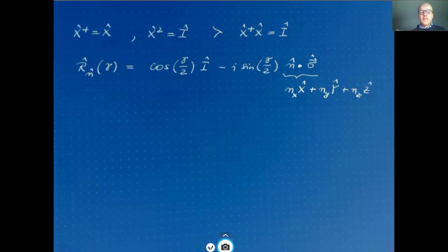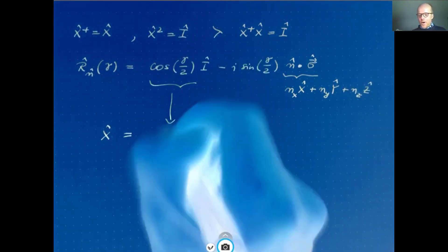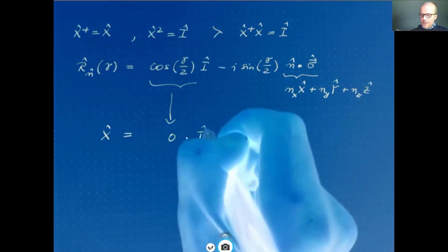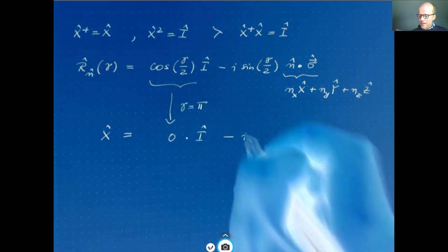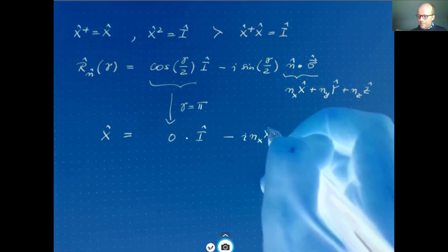Now, if we want to write the Pauli x in this form, then obviously the cosine must be equal to zero. Now, the cosine is, so we must have zero times the unit vector. This is the case if the angle gamma is equal to pi. Right? Then, if the angle gamma is equal to pi, then we have the sine of gamma half, the sine of pi half, this is equal to one. So then we have minus i nx Pauli x, then we have minus i ny Pauli y, and we have minus i nz Pauli z.